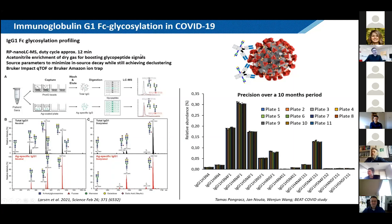How do we do that? It's a rather simple assay. We take patient sera where antibodies are present, purify total IgG1 or total IgG from these sera using ProG beads. We also purify the antigen-specific antibodies by applying the antigen on an ELISA plate, absorbing the antibodies, and then eluting with acid. Then we do a simple tryptic digestion — no reduction or alkylation — generating a nine amino acid peptide with the N-glycosylation site.